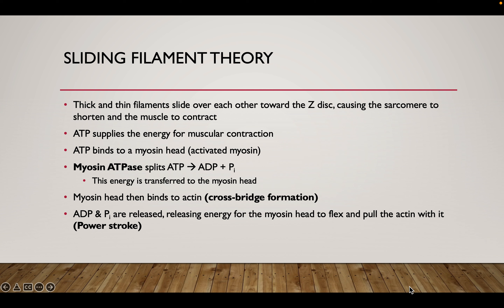In order for this whole process to occur, we need calcium — we need our action potential to help release the calcium from the SR. But we also need ATP. The ATP is going to be responsible for supplying the energy necessary for our muscle contraction. This is why when we talk about cellular respiration and carbohydrate metabolism, we're doing all of that to make ATP, and we're using that ATP in our muscle contraction process.